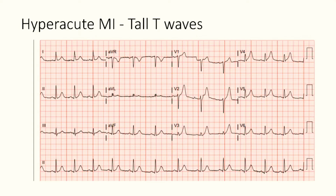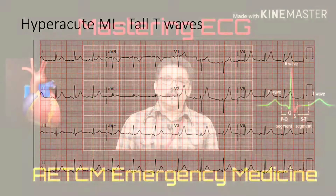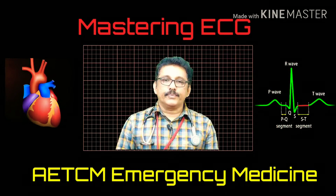In some area-specific leads, if you are getting tall T-waves, you have to think about hyperacute MI. In this ECG you can see tall T-waves in V1, V2, V3, V4, V5. If the patient is having chest pain, strongly think about anterior hyperacute myocardial infarction.